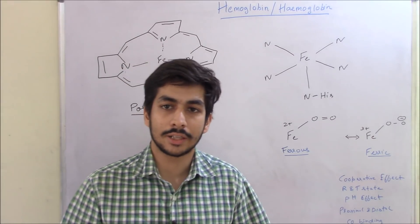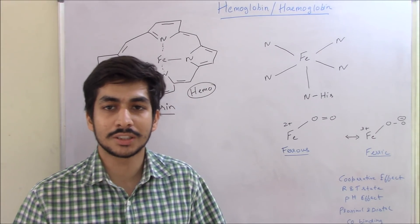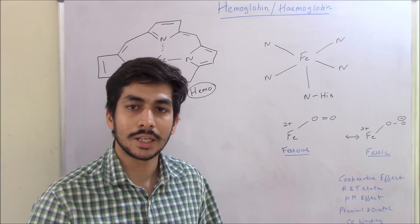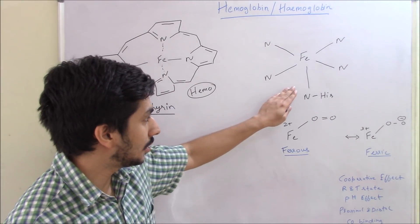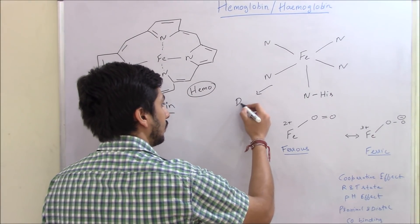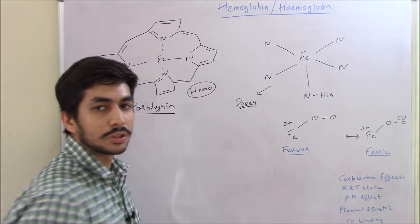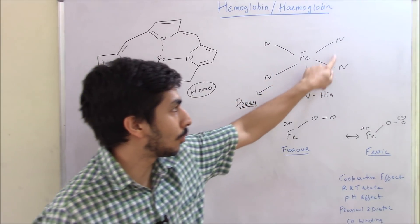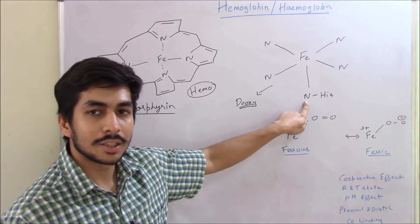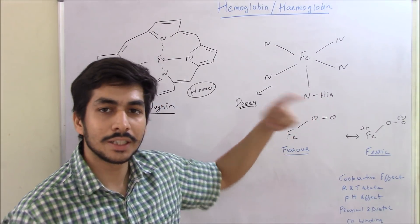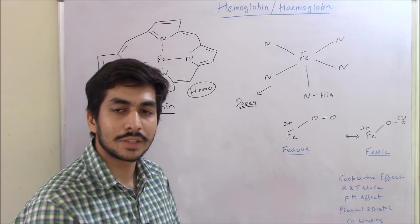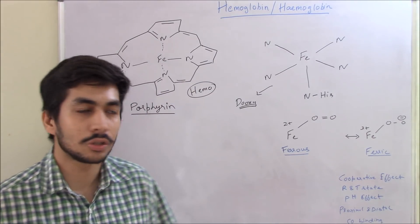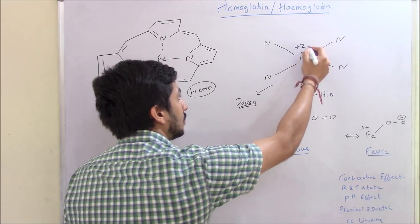There are two forms of hemoglobin: the deoxy form and the oxy form. The deoxy form does not have oxygen bound to it; in the oxy form, oxygen is bound. In deoxy hemoglobin, there are four nitrogens of the porphyrin ring, and then a histidine amino acid is attached — the nitrogen of that histidine is attached to the iron.